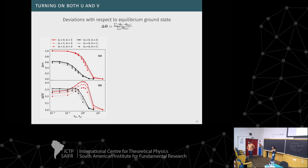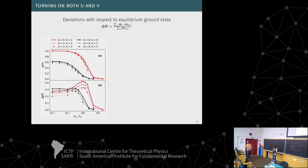Follow-up question: Do you have an intuitive argument to explain why the entanglement is growing before dropping? Answer: This was observed for quenches in spin chains, so it's not something never seen before. It seems that depending on the time scale of the quench, excited entanglement states participate in the dynamics — the instantaneous state is a linear combination of many states of the instantaneous Hamiltonian involving more entangled ones. In those spin chain works it happens close to a critical point, and here we don't have that critical point, but it's not entirely new.